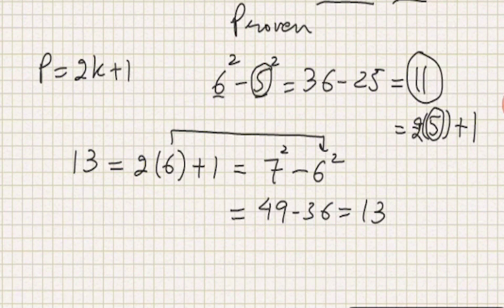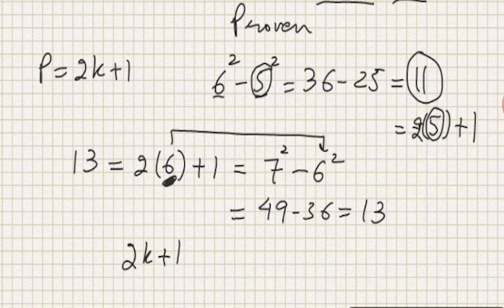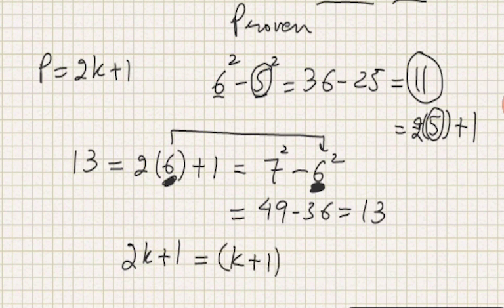Now I can say because this number which I earlier called k is seen right here, I can write it as (k + 1)² - k². Because if this is k, then this would be k + 1, right?